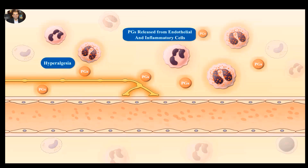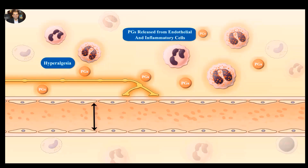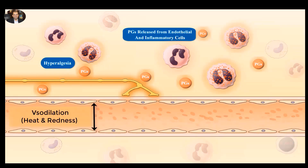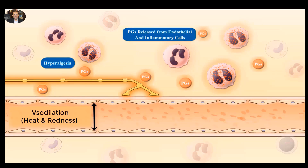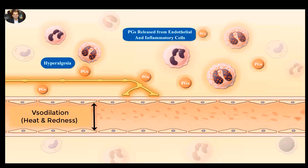In the blood vessels, prostaglandins induce vasodilation, which is reflected as heat and redness at the site of inflammation.